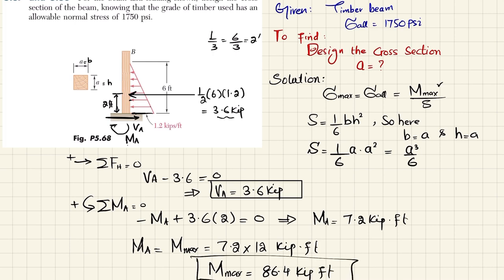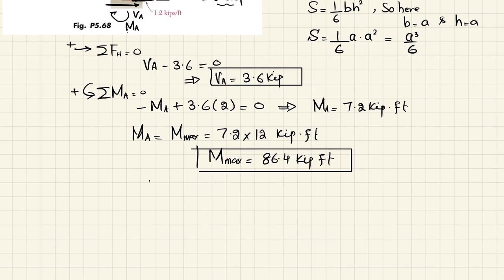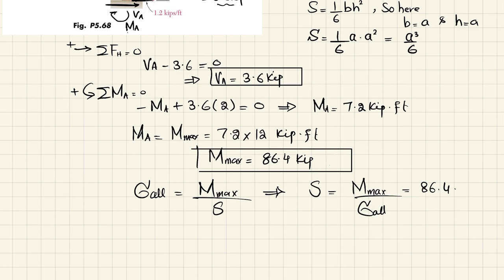So this is the maximum moment. You have allowable stress as well, that is 750 psi. So allowable stress is equal to maximum moment divided by section modulus, so section modulus is equal to maximum moment divided by allowable stress. Maximum moment is 86.4. This is not kips, we have multiplied with inch, so the unit will be in